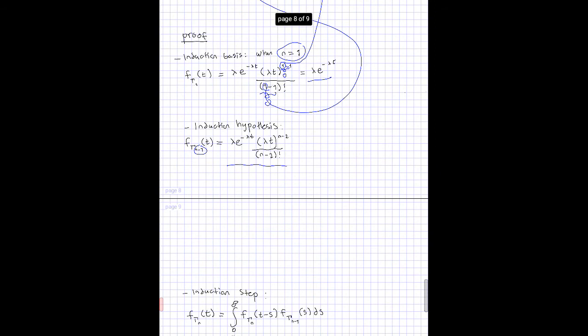Next we have the induction step, which says that the probability density function we want to show equals the gamma distribution. To see why, we argue as follows: n minus 1 random variables equal the value s, and then we have one additional random variable, which in total gives n random variables. This n-th random variable should equal t.